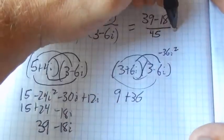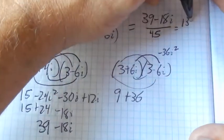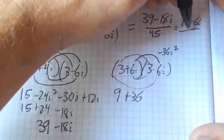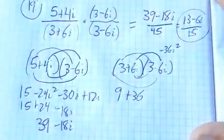So I can divide out that 3, giving me 13 - 6i over 15.